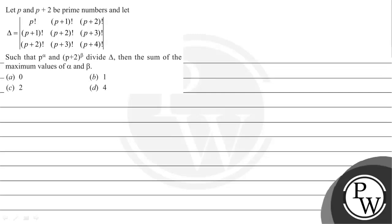Hello! Let's read the given question. The question states that let p and p plus 2 be prime numbers, and let delta be a determinant with first row p factorial, p plus 1 factorial, p plus 2 factorial; second row p plus 1 factorial, p plus 2 factorial, p plus 3 factorial; and third row p plus 2 factorial, p plus 3 factorial, p plus 4 factorial. Given that p to the power alpha and p plus 2 to the power beta divide lambda delta, find the sum of the maximum values of alpha and beta.